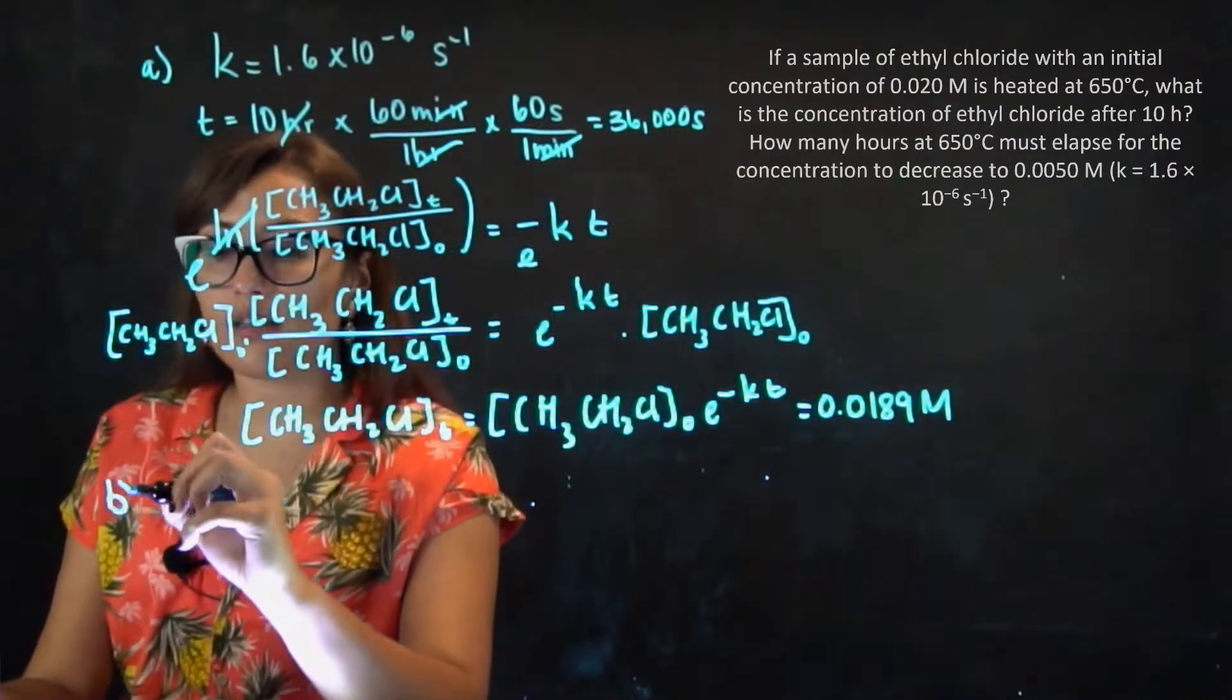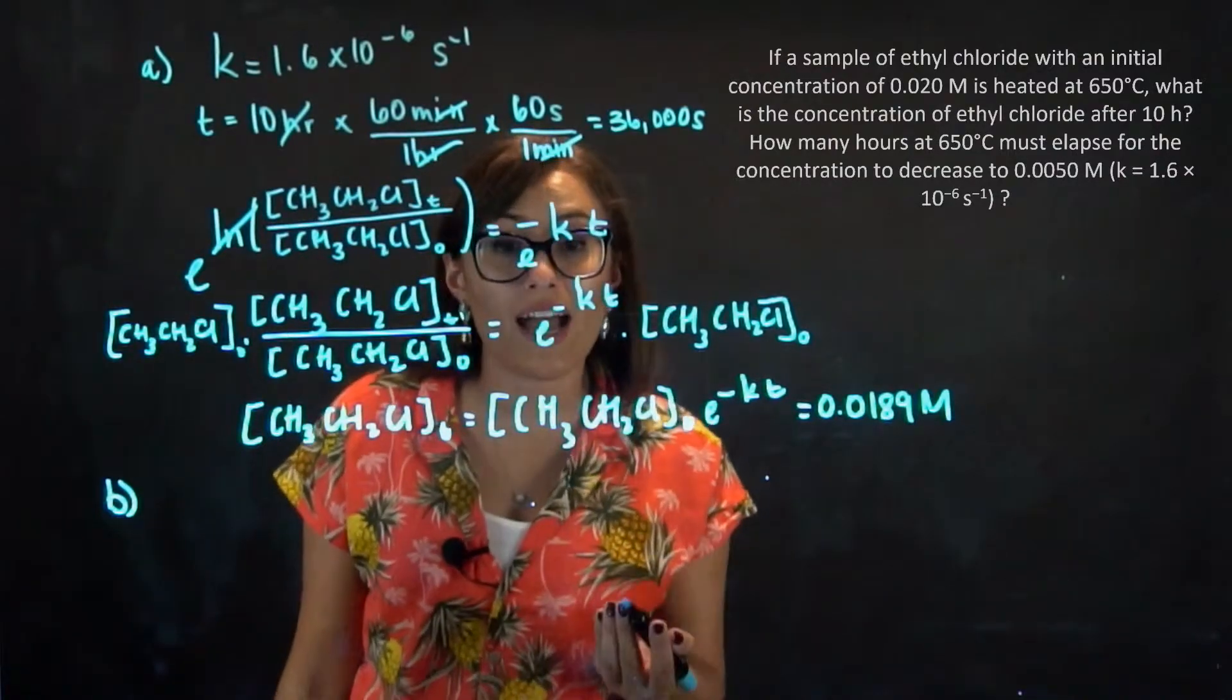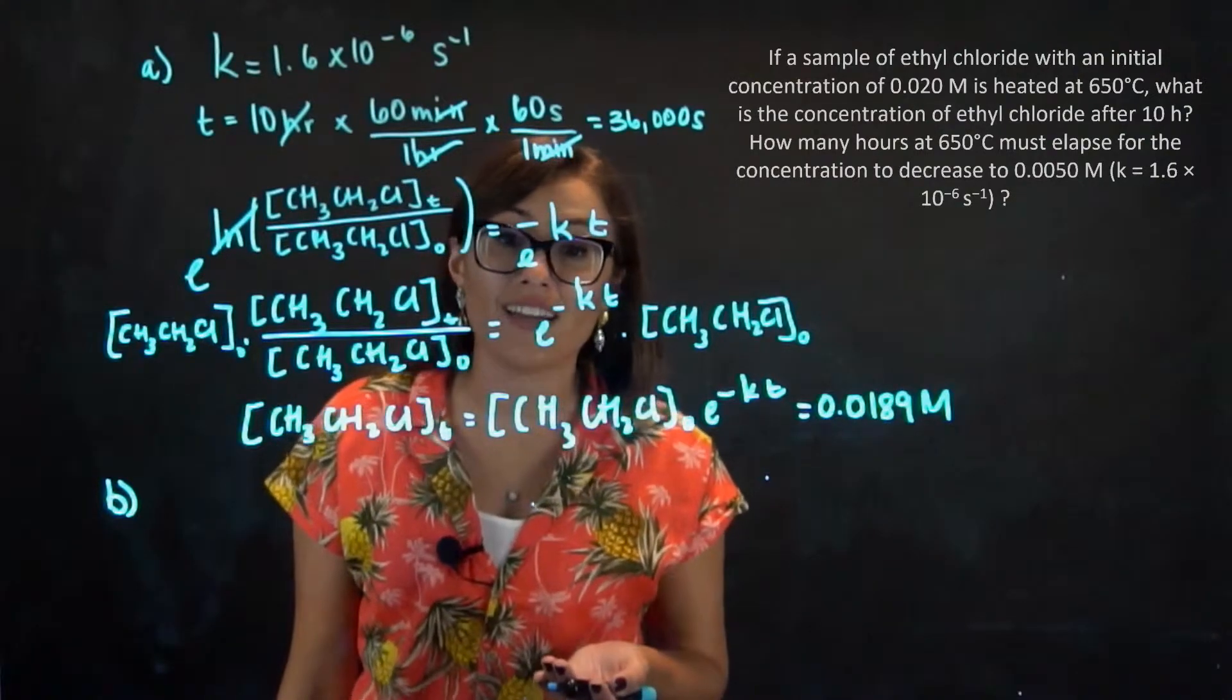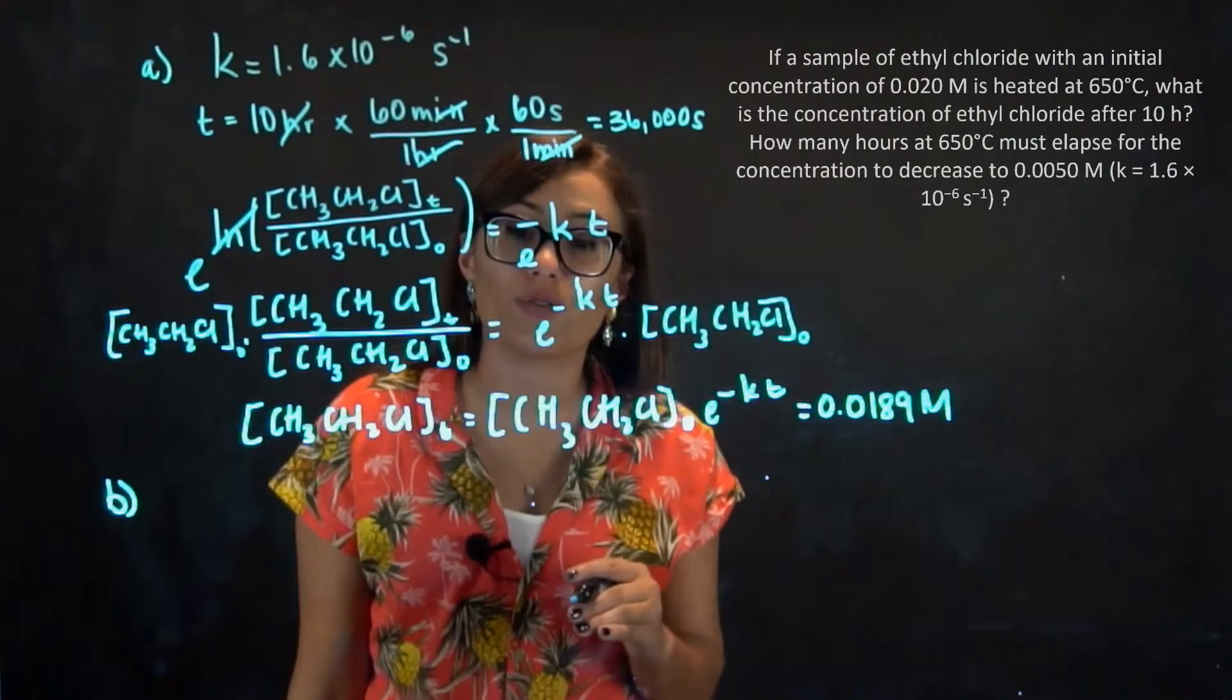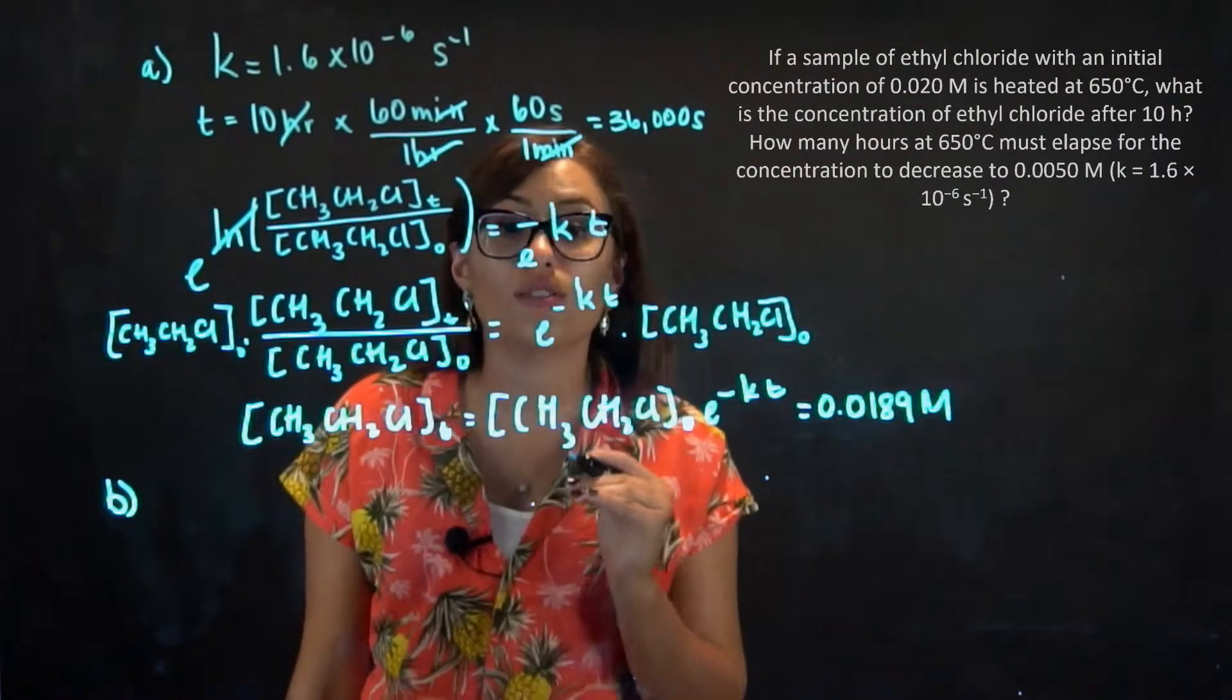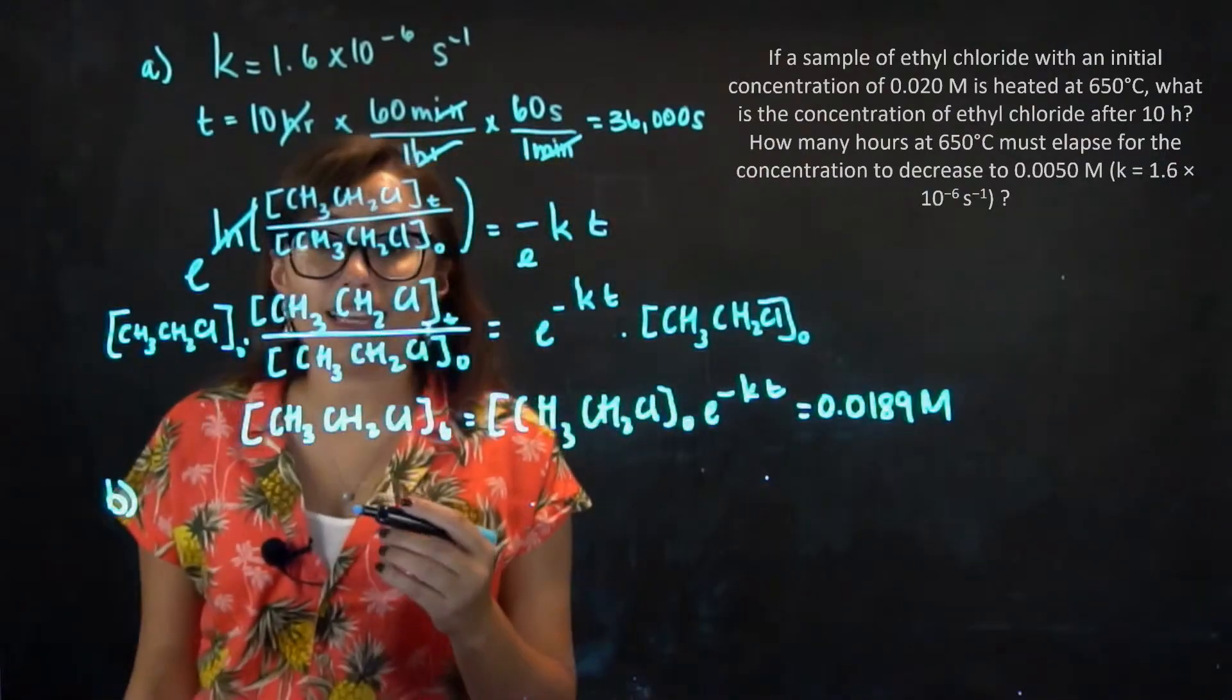And in part B, they are asking us for something similar. They're asking us for the time, or how long will it take. They're asking us to determine how many hours at 650 degrees Celsius must elapse for the concentration to decrease to 0.005 molar.